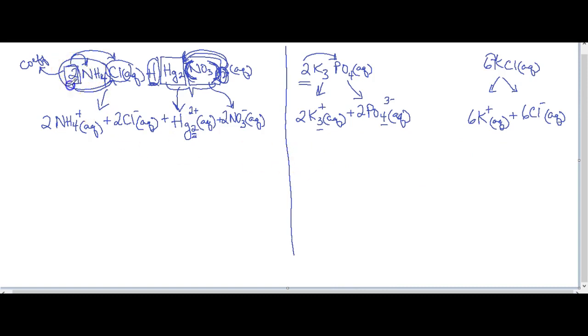If you have a coefficient, it applies to both the ions. You keep the closest subscripts as is, unless the subscript is outside of the parentheses. So I hope that helps. Thanks for watching. Bye for now.